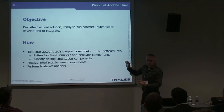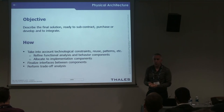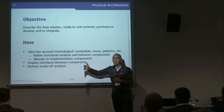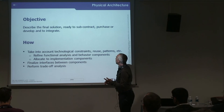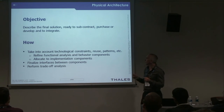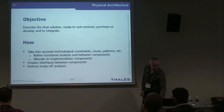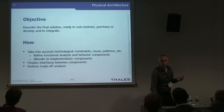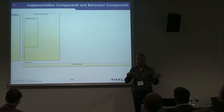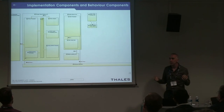Back to the timelapse. Physical architecture. The physical architecture describes the final solution that is ready to subcontract, purchase, develop, or integrate. If we develop it, we can use a system-to-subsystem transition and initialize the engineering of the downstream teams. In this engineering phase, we take into account technological constraints, reuse patterns, we refine the functional analysis and allocate to resources — mainly hardware. We use this architecture model to perform non-functional and trade-off analyses between different alternatives, seeing how the architecture performs with regard to performance, safety, mass, cost, and all these contradictory constraints.